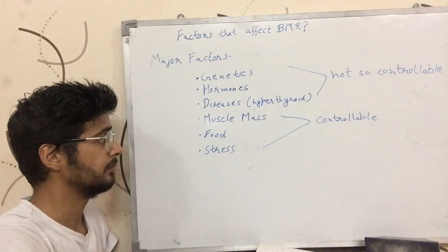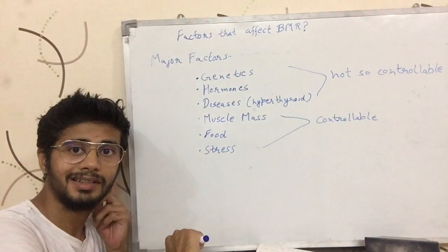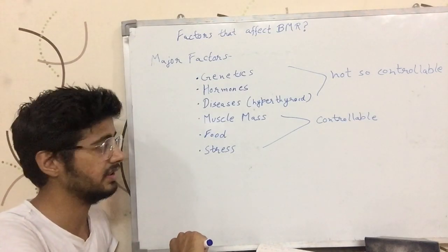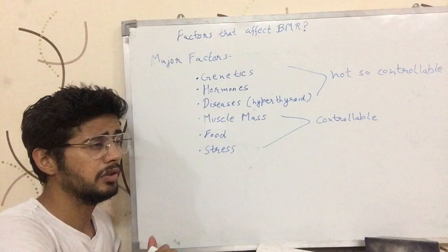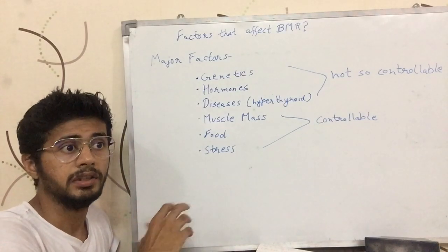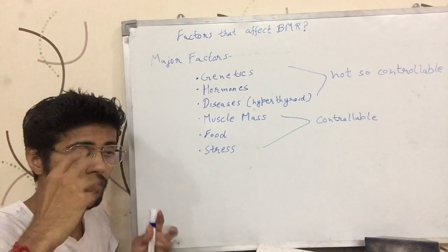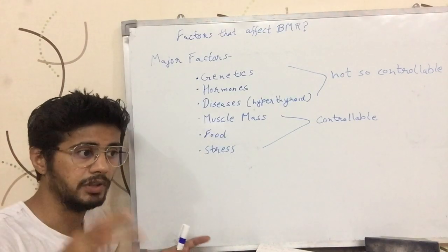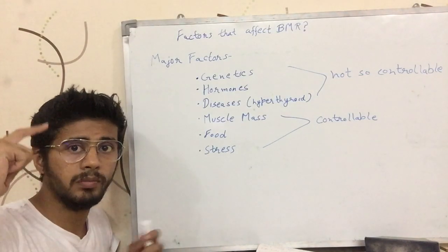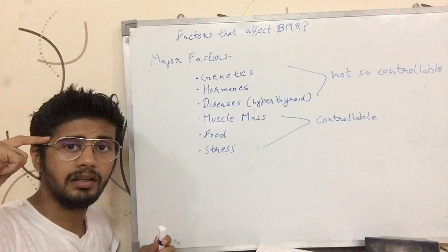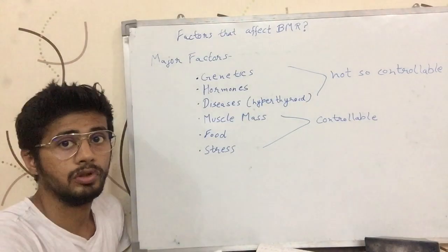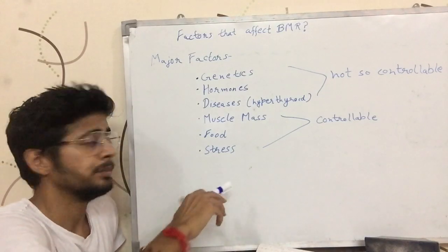The third one is stress. Stress is not good in any case, not just for BMR purposes. You might have seen people who are worried a lot — they tend to eat a lot of food. When you are worried, your brain is thinking too much, so it is expending a lot of energy in thinking, which makes you feel more hungry. So your BMR kind of changes under stress.